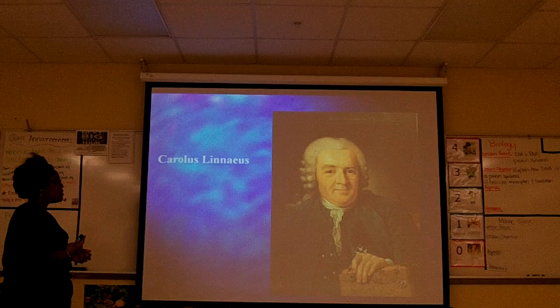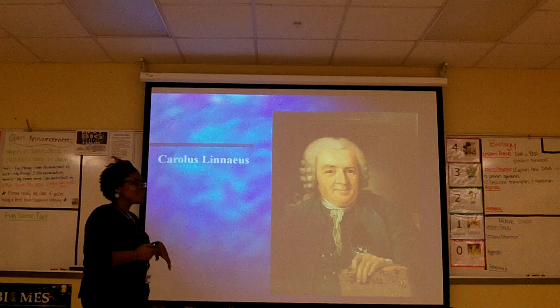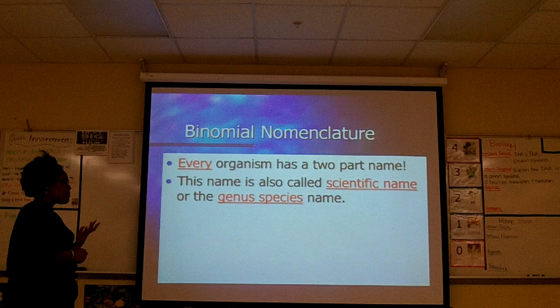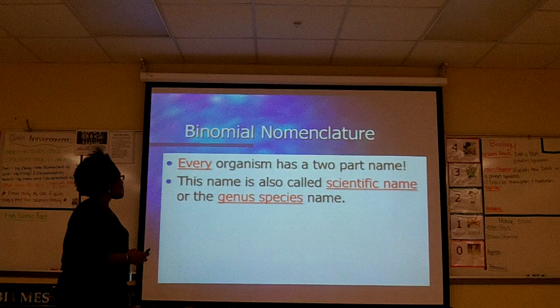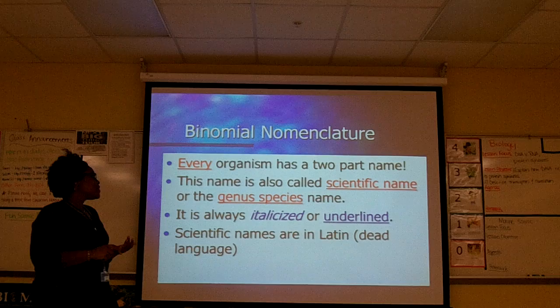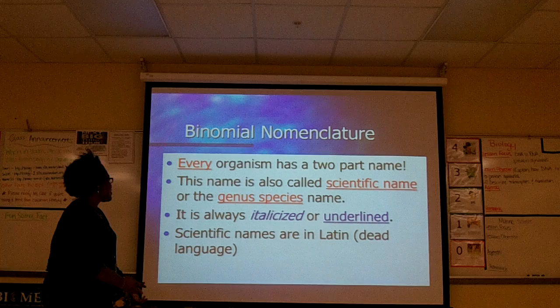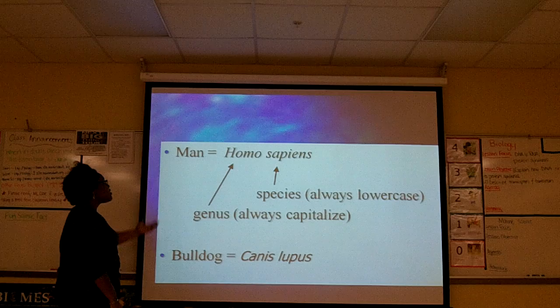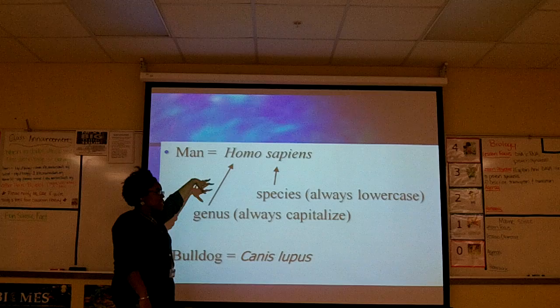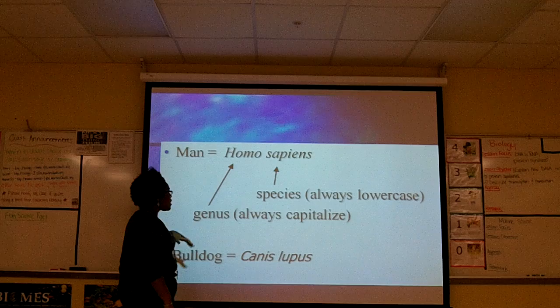With binomial nomenclature, every organism has a two-part scientific name — also called genus and species — always italicized or underlined, always in Latin. The genus is always the first name, always capitalized; the species is always lowercase. For example, humans are Homo sapiens. The scientific name of a bulldog is Canis lupus, and all domesticated dogs share that genus and species. Sometimes you'll have subspecies, but we'll get into that later.